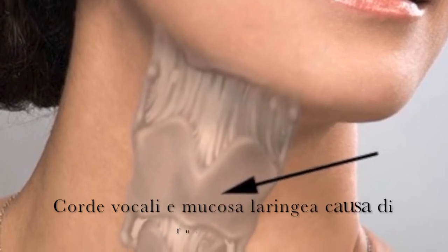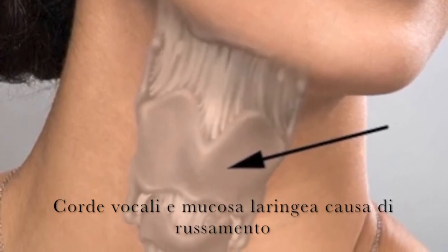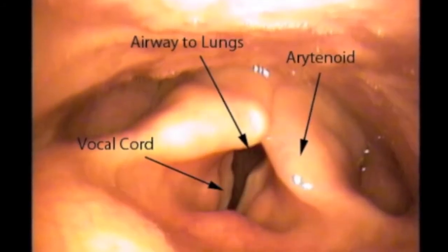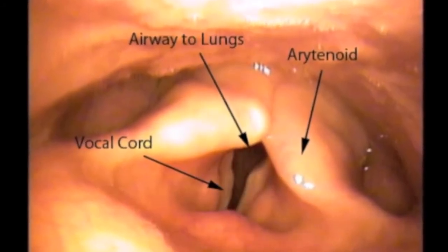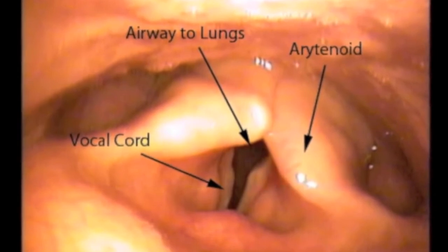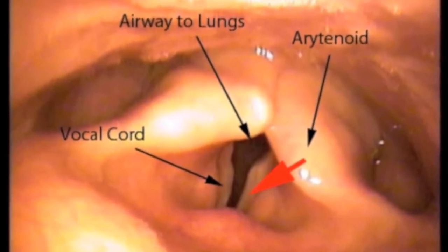A final source of a snore can come from the voice box itself. In this video, you can see the mucosal folds above the vocal cords known as arytenoids collapsing into the airway and vibrating causing a snore.